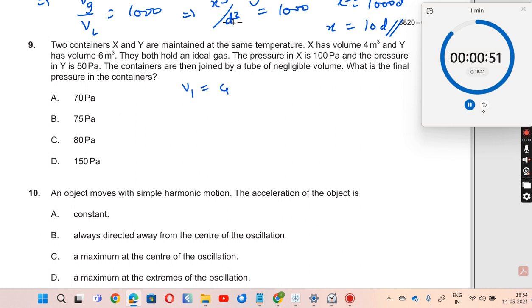So V1 is equal to 4. Y has a volume V2 is equal to 6. The pressure in X, P1 is equal to 100, pressure in Y, P2 is equal to 50.